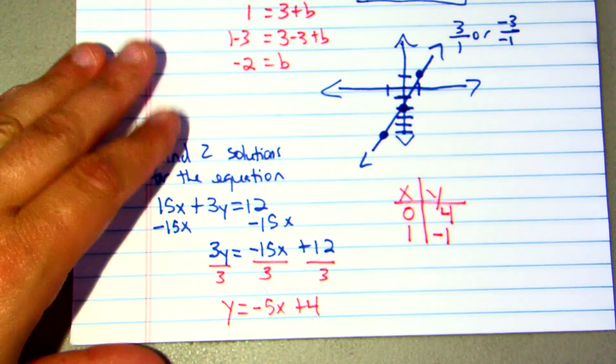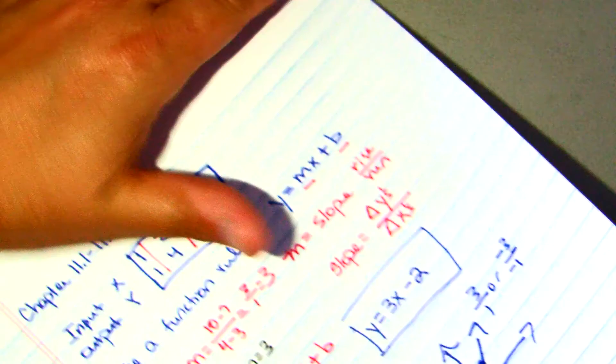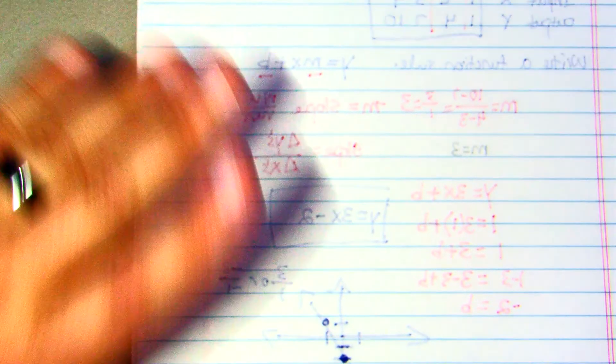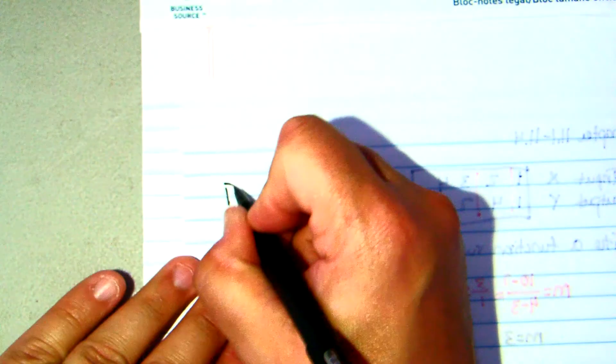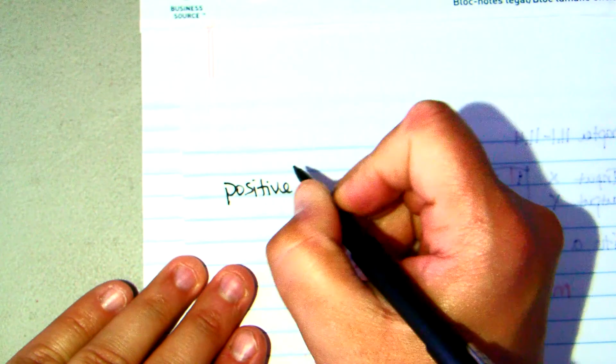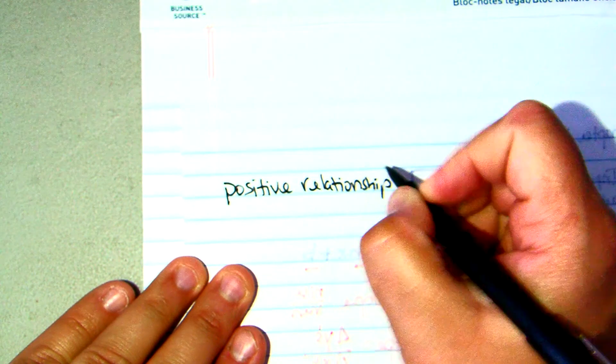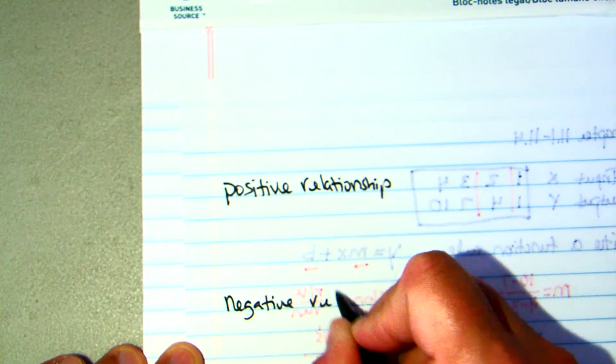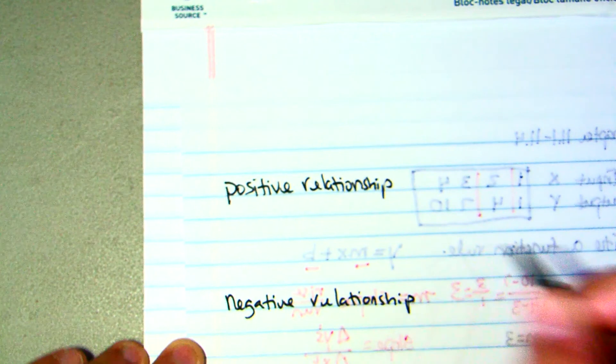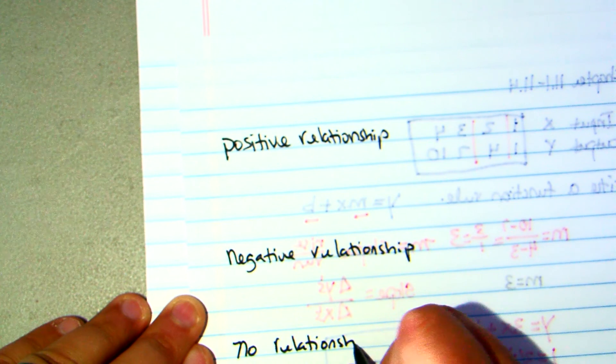Lastly, on the test, you'll have to interpret some data. Some data that deals with a scatterplot. And the scatterplot, remember there are three ways that we can have data on there. You can have what's called a positive relationship. And then lastly, they can have no relationship at all.